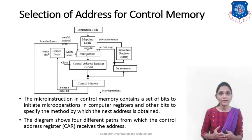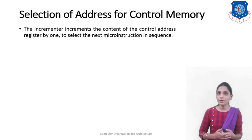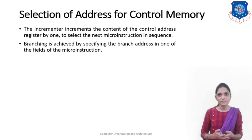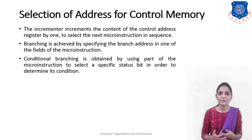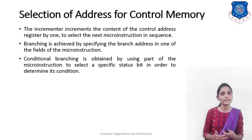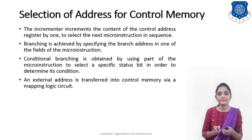The control address register has four inputs: increment the contents by one to select the next micro instruction in sequence; branching is achieved by specifying a branch address in a field of the micro instruction; conditional branching is obtained by selecting a specific status bit; and the external address is transferred into control memory via the mapping logic circuit.